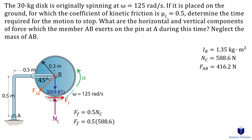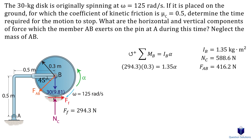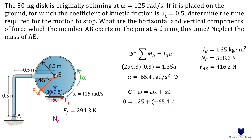With the normal force known, we calculate the frictional force at C. We then find the moment about point B — since we're calculating the moment about the center of mass, no kinetic diagram is needed. Picking counterclockwise as positive: the frictional force times the perpendicular distance from C to B equals the mass moment of inertia times angular acceleration. All other forces pass through the line of action. Solving gives us the angular deceleration. Using the constant-acceleration kinematics equation with final angular velocity zero, initial angular velocity 125 rad/s, and the deceleration found, we solve for the stopping time t.